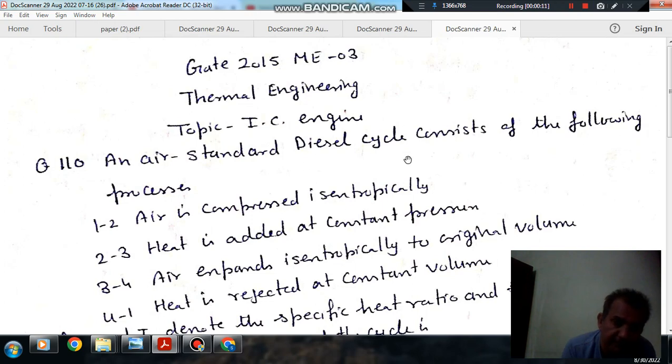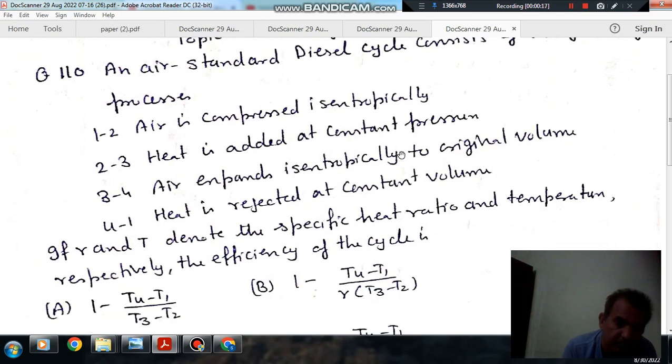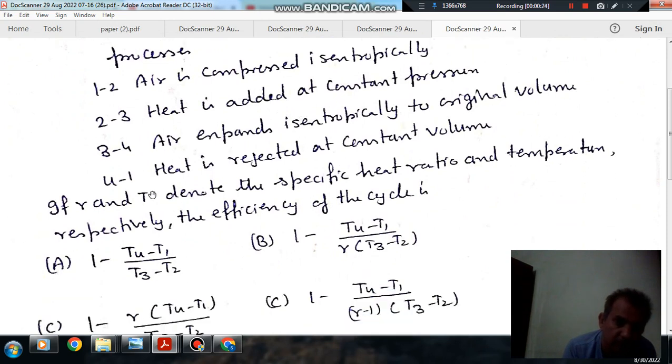An air standard diesel cycle consists of the following processes: 1-2, air is compressed isentropically; 2-3, heat is added at constant pressure; 3-4, air expands isentropically to original volume; 4-1, heat is rejected at constant volume.